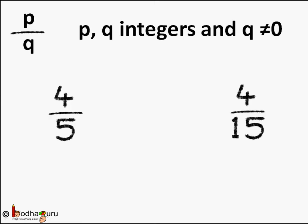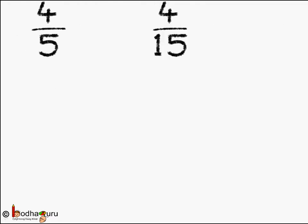Hello friends. Any number that can be expressed as a ratio of two integers p by q, where p and q are integers and q is not equal to 0, is a rational number — we learned this in our previous lessons. So 4 by 5 and 4 by 15 are rational numbers because they are already in fraction form.